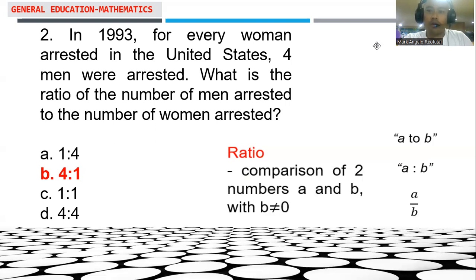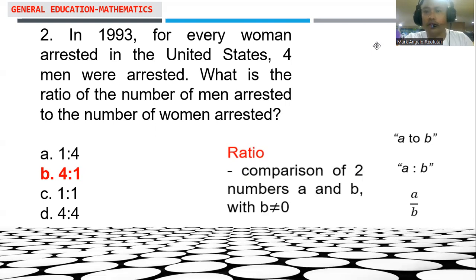In that particular situation, it says every woman arrested equals four men. So we know there were four men and only one woman. Therefore, the ratio of the number of men arrested to the number of women arrested is equal to 4 is to 1. The answer here is letter B.